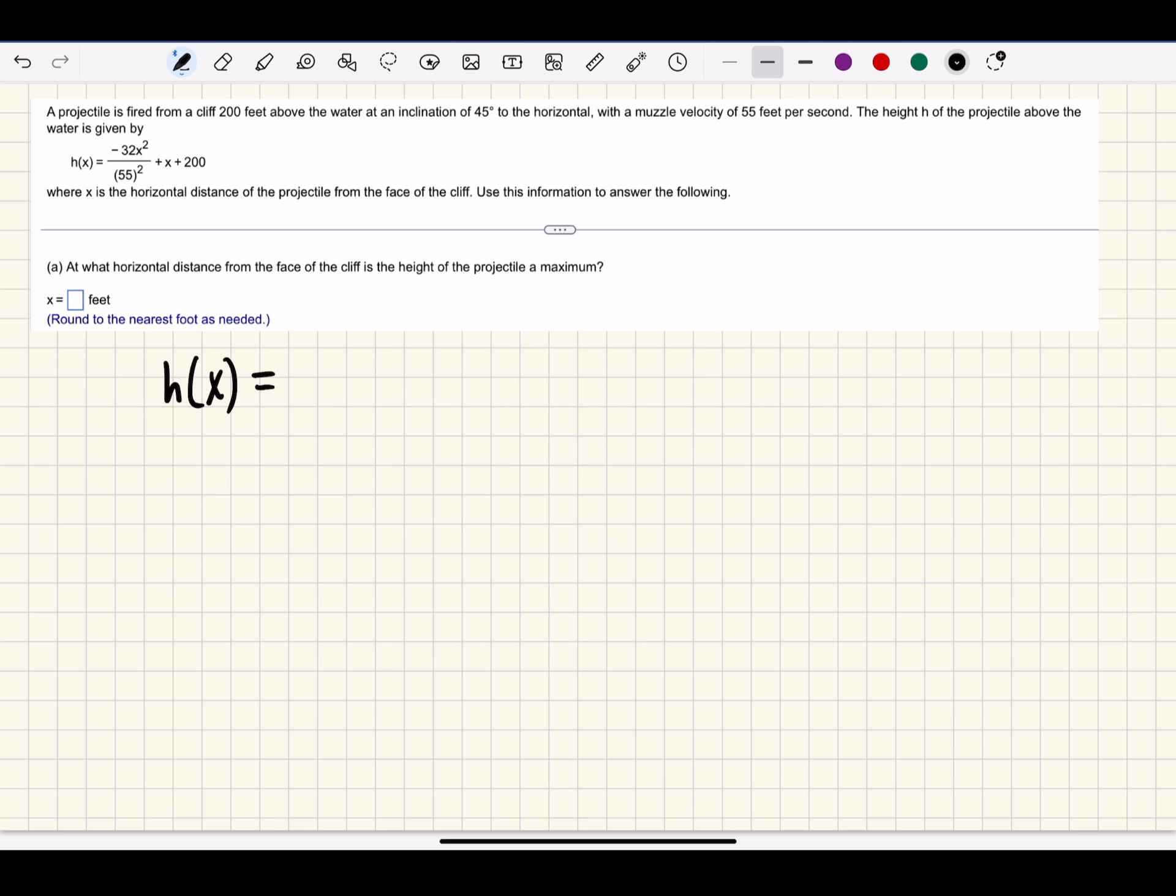h(x) = -32/(55²) × x² + x + 200 is a quadratic function. The graph would be a parabola. Quadratic functions are in the form y = ax² + bx + c, and parabolas open down when the leading coefficient, the coefficient on the x² term, is less than zero, which is what we have here. So this will be a parabola that opens down.